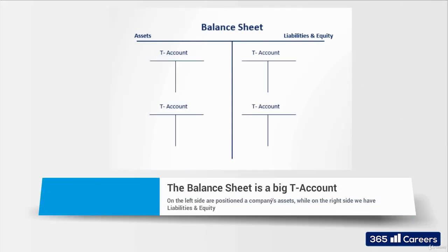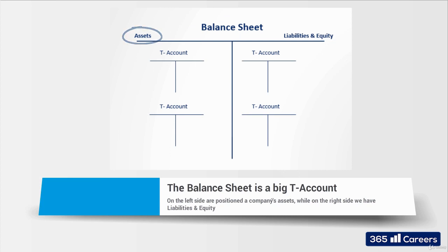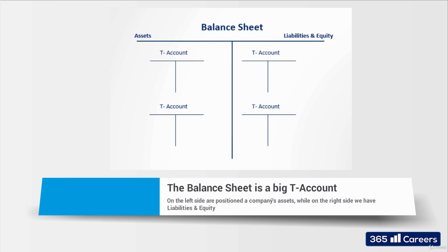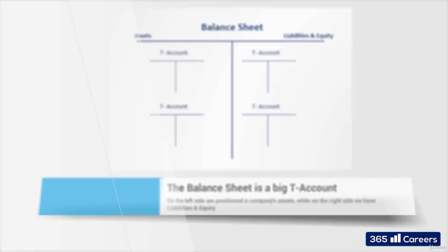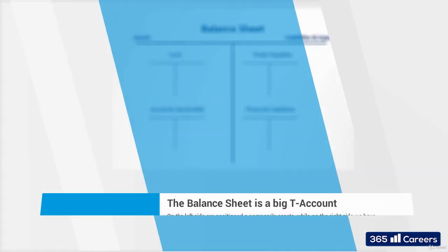We can think of the balance sheet of a given company as one big T-account. On the top of the letter T, we will have the title 'balance sheet.' On the left side will be positioned the company's assets, while on the right side will be its liabilities and equity. Contained inside this large T-account will be smaller T-accounts — on the left, the asset side, and on the right, where we have liabilities and equity.